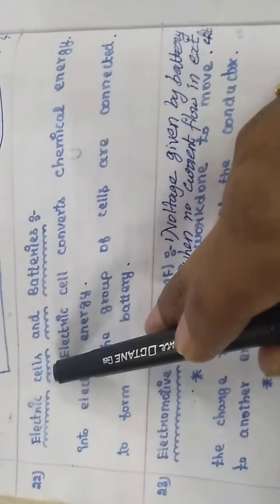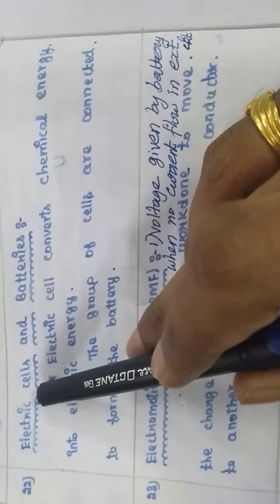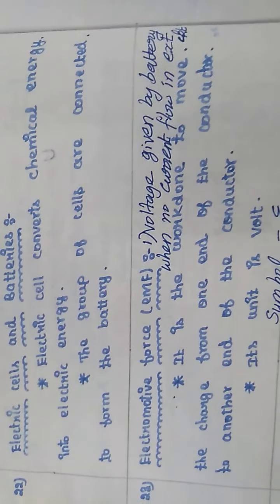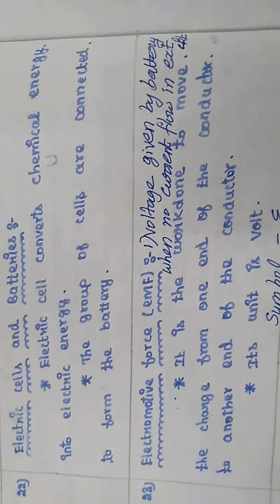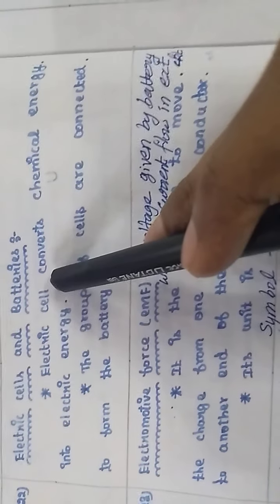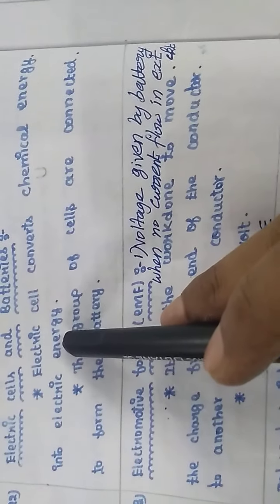Students, now we are going to talk about electric cells and batteries. You know how to use electric cells in wall clocks and remote controls. What is the purpose of the electric cell? It converts chemical energy into electric energy.